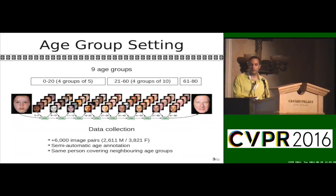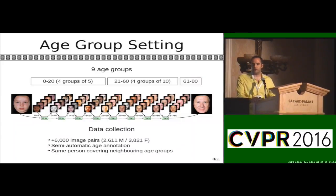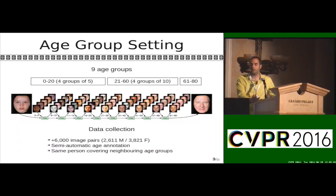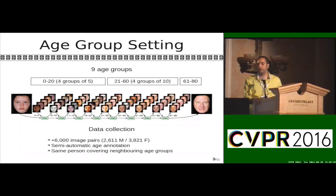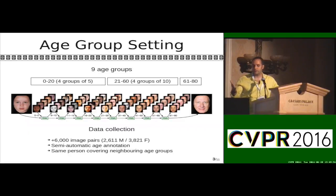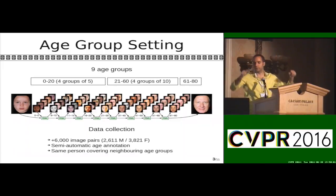We also have a group for ages over 61. In order to model this, we had to collect a new dataset consisting of more than 6,000 image pairs, annotated in a semi-automatic fashion with an off-the-shelf age estimator plus some manual annotation to polish the result. The pairs consist of the same person in two neighboring age groups.